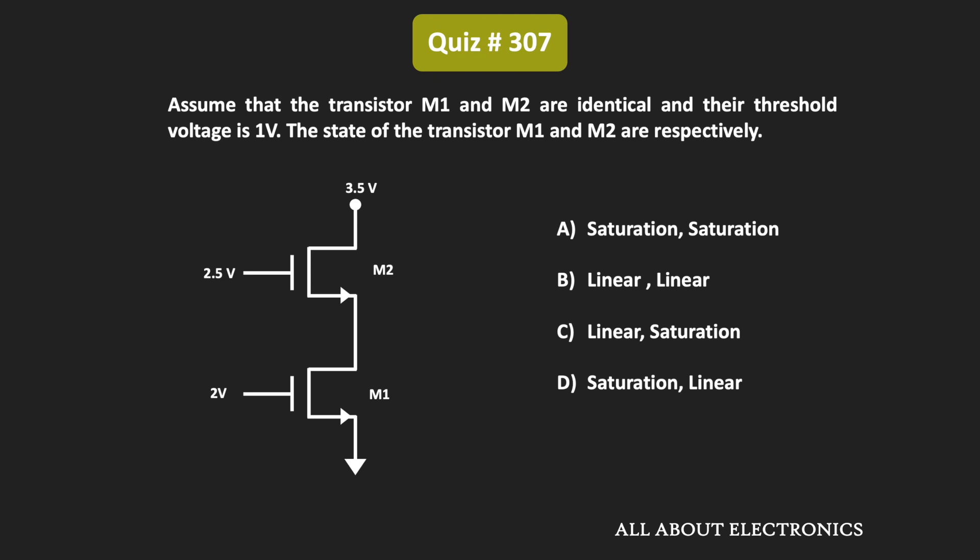Hey friends, welcome to the YouTube channel all about electronics. So in this question, we have been given this MOSFET circuit and here we have been given that the transistors M1 and M2 are identical and their threshold voltage is also equal to 1V. So here we have been asked to find the state of transistors M1 and M2.